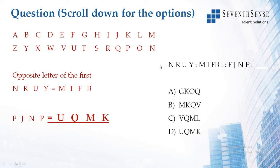This is an analogy given with a coding pattern. Let us see how it works. NRUY is written as MIFB—that is the analogy. NRUY is MIFB. So what is the analogy for FJNP?